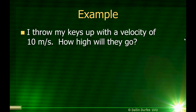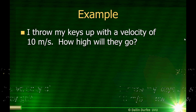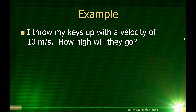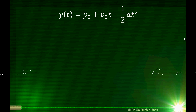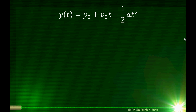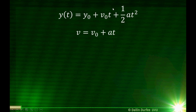Here's another example. I throw my keys up with a velocity of 10 meters per second. How high would they go? I've got an equation that tells me height as a function of time, so I just need to find the time at which they are at the highest point. I'm going to maximize this curve — the curve's maximum happens when the derivative is equal to zero. The derivative is just the velocity, which is v-naught plus at.